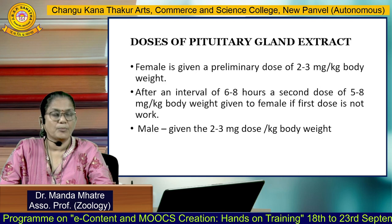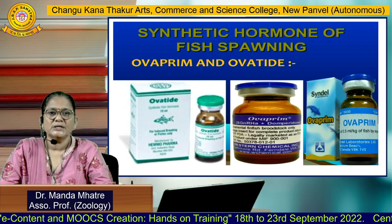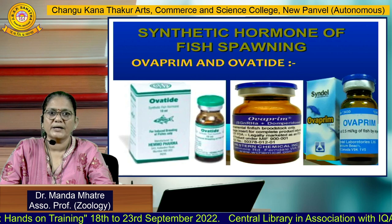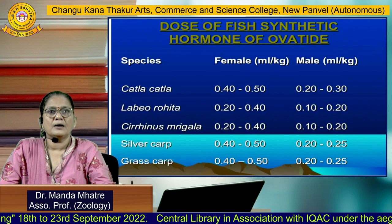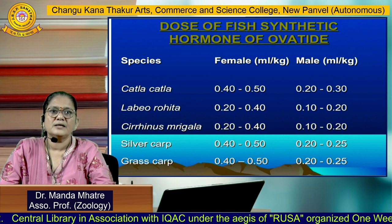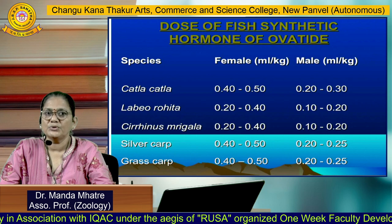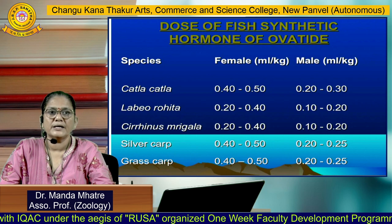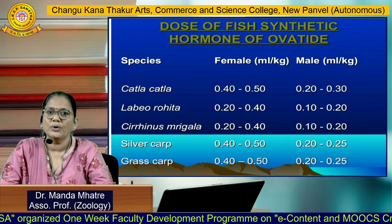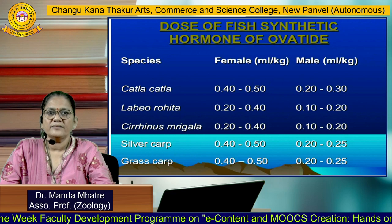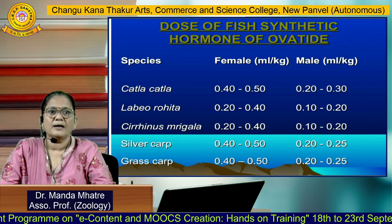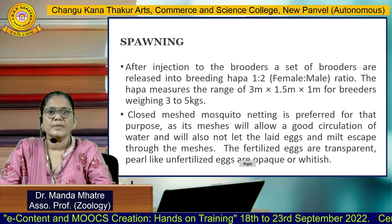Synthetic hormones are also used for induced breeding in the form of Ovaprim and Ovatide. These are available in the market in various doses. For Ovatide, the dose for Catla catla is 0.4 to 0.5 ml per kg given to the female and 0.2 to 0.3 ml per kg given to the male. In Labeo rohita (rohu), the dose is 0.2 to 0.4 ml per kg for female and 0.1 to 0.2 ml per kg for male. In silver carp, the female dose is 0.4 to 0.5 ml per kg and male is 0.1 to 0.2 ml per kg.